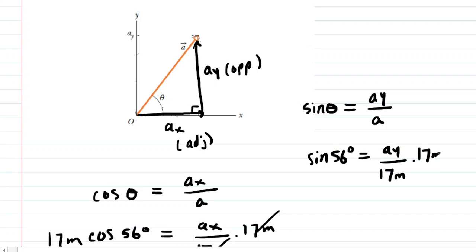We multiply both sides of the equation by 17 meters. So let's see what the 17 times sine of 56 turns out to be, and that's about 14.1 meters. So this is the correct answer for part B, the Y component of vector A. Now let's look at parts C and D.